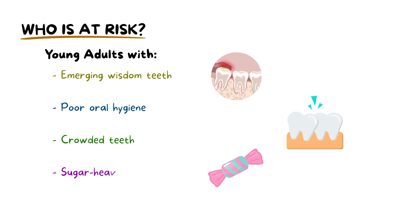Pericoronitis commonly affects younger adults when wisdom teeth emerge. The condition is aggravated by poor oral hygiene, crowded teeth, and sugar-heavy diets, promoting bacterial growth around the partially erupted tooth.